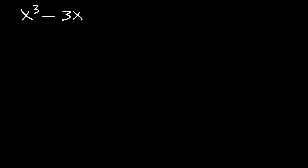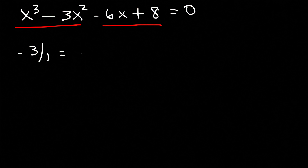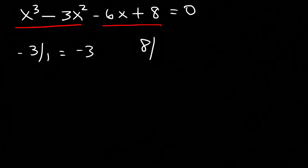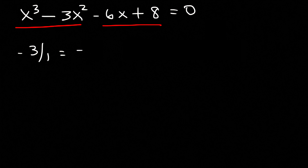Let's try this one: x cubed minus 3x squared minus 6x plus 8 is equal to 0. Find all the zeros of the function. We can't factor by grouping because the first two terms do not have the same ratio as the last two. Negative 3 divided by 1 is not the same as 8 divided by negative 6, which reduces to negative 4 thirds. So we can't factor by grouping and we can't reduce it to quadratic form.